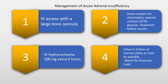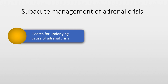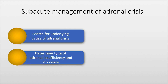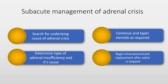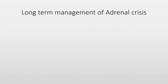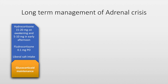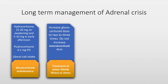We must watch for fluid overload. The sub-acute management of adrenal crisis includes a search for the underlying cause, determining the type of adrenal insufficiency — whether primary or secondary — continuing and tapering steroids as required, and beginning mineralocorticoid replacement after IV normal saline has been stopped. The long-term management includes glucocorticoid maintenance, generally hydrocortisone 15–20 milligrams on awakening and 5–10 milligrams in the early afternoon, which most closely resembles the body's natural secretion of cortisol. Fludrocortisone is added at a dose of 0.1 milligrams orally and salt intake is liberalized. In case of a minor febrile illness, the patient must increase the glucocorticoid dose to two or three times but should not increase the mineralocorticoid dose.